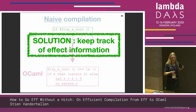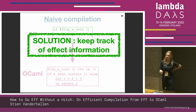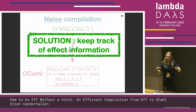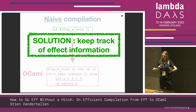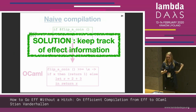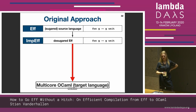But how do we do this? We actually keep track of this effect information. While going from F to OCaml, at each point we want to know which part of the program has some effects and which don't — which we can see as pure computations and which we can't. So how do we do this?